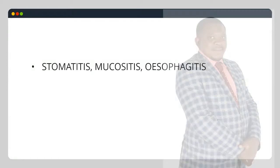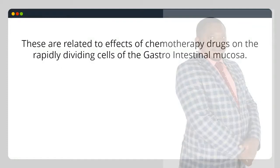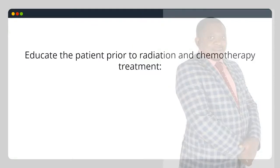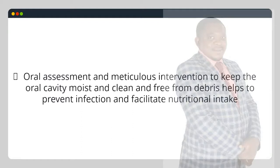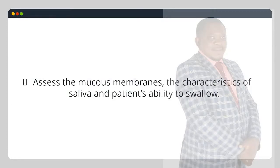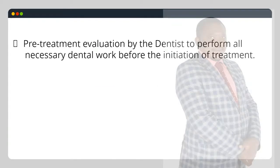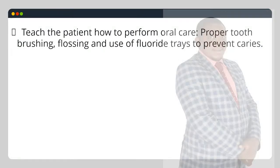Stomatitis, mucositis, esophagitis. These are related to effects of chemotherapy drugs on the rapidly dividing cells of the gastrointestinal mucosa. Educate the patient prior to radiation and chemotherapy treatment. Oral assessment and meticulous intervention to keep the oral cavity moist, clean and free from debris helps to prevent infection and facilitate nutritional intake. Assess the mucous membranes, characteristics of saliva and patient's ability to swallow. Pre-treatment evaluation by the dentist to perform all necessary dental work before initiation of treatment. Teach the patient how to perform oral care: proper tooth brushing, flossing and use of fluoride trays to prevent caries.